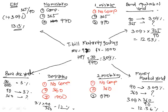So if you simply remember the analogy of three mistakes, you can remember all five yields. HPY: how much I earned divided by how much I invested — the basic yield. Making no mistakes with compounding and 365 days gives effective annual yield at 13.13%. Stop compounding — one mistake — but keep 365 days, you get bond equivalent yield at 12.53%. Two mistakes — no compounding and 360 days — gives money market yield at 12.36%. All three mistakes gives bank discount yield at 12%. Please write this down now.